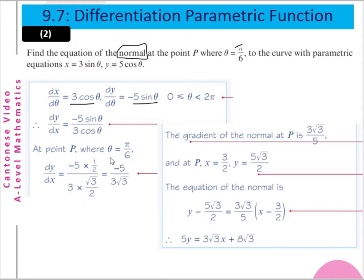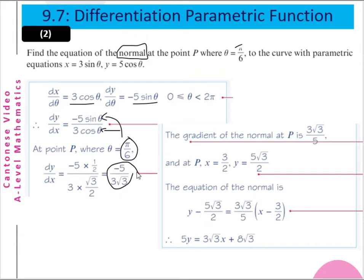At point P where θ equals π/6, we substitute π/6 into θ. We get dy/dx equals minus 5 times (1/2) over 3 times (√3/2), which equals minus 5 over 3√3. So the gradient of the normal at the point is 3√3 over 5, which is the negative reciprocal. At point P, x equals 3/2 and y equals 5√3/2.